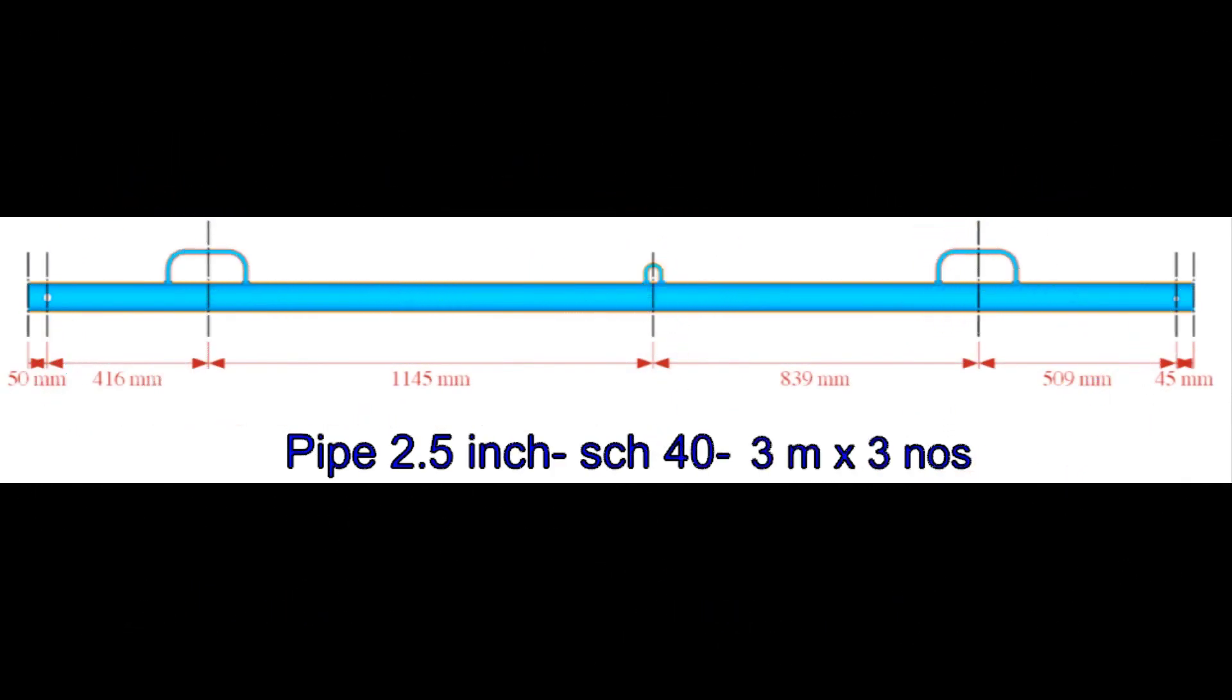The lugs of the tripod are made from 2.5-inch, 40-schedule pipe. The length of each leg is 3 meters each.